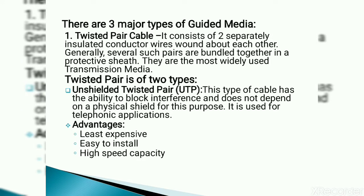There are three major types of guided media. First is twisted pair cable. It consists of two separately insulated conductor wires wound about each other. Generally such pairs are bundled together in a protective sheet. They are most widely used in transmission media. Twisted pair cable is classified into two types: unshielded twisted pair (UTP) and shielded twisted pair (STP). UTP has the ability to block interference without depending on a physical shield, and is used in telephonic applications.